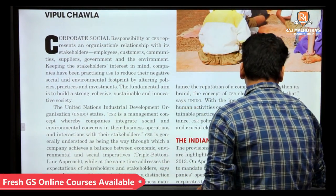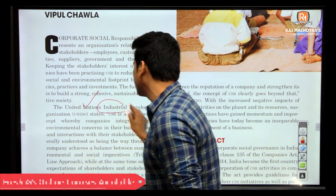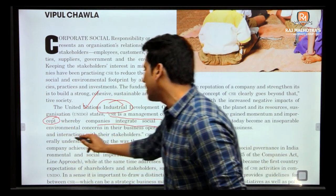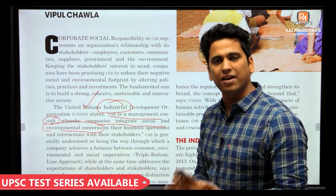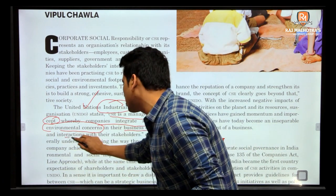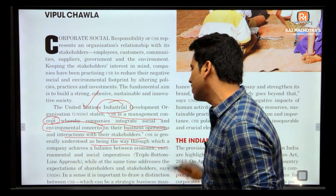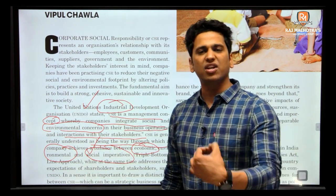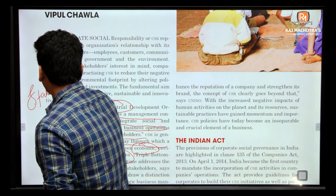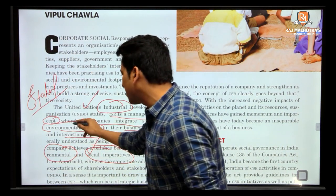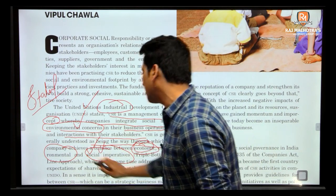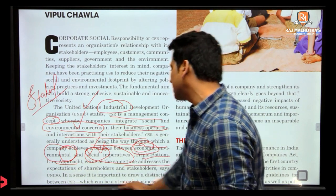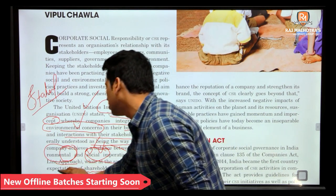Now let's see how the United Nations Industrial Development Organization defines CSR. CSR is a management concept — this is very very important — whereby companies integrate social and environmental concerns in their business operations and interaction with their stakeholders. It is generally understood as the way through which a company achieves a balance between economic, environmental and social imperatives — the triple bottom line approach — while at the same time it addresses the expectations of shareholders and stakeholders, says UNIDO.